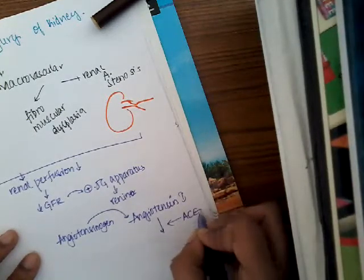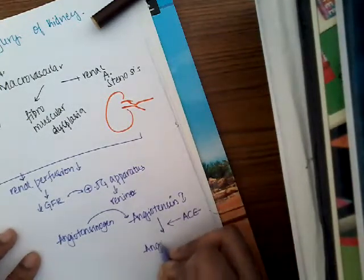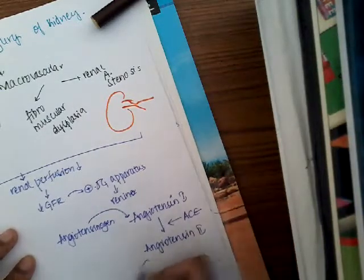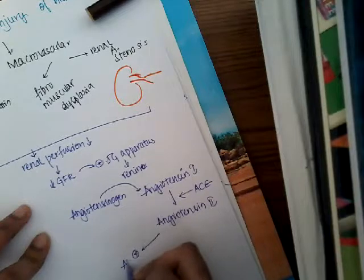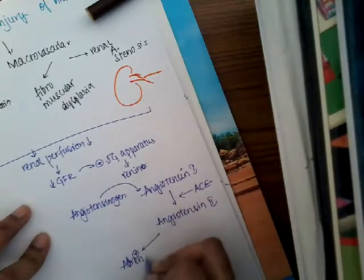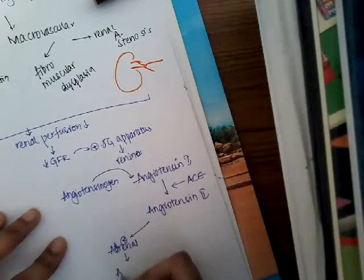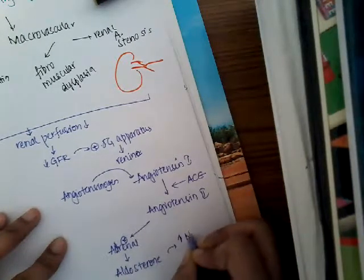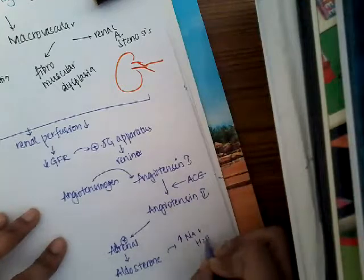In the presence of angiotensin converting enzyme, it gets converted to angiotensin 2. This angiotensin 2 will activate adrenals and these adrenals will produce aldosterone, and this aldosterone increases salt and water absorption.